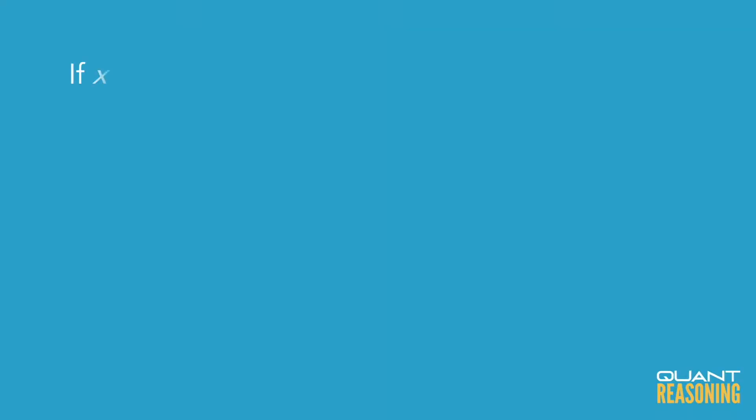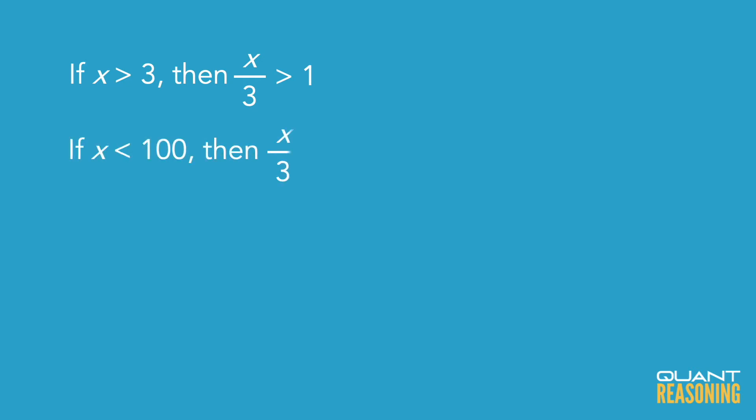If x is greater than 3, 1 third of x would be greater than 1. If x is less than 100, 1 third of x would be less than 33 and a third.